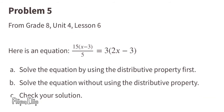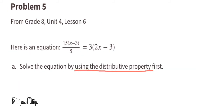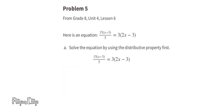Problem number 5, from 8th grade Unit 4, Lesson 6. Here is an equation. Part A: Solve the equation by using the distributive property first. Using the distributive property, we can rewrite the equation: 15 times x and 15 times negative 3 gives 15x minus 45, all over 5. And 3 times 2x and 3 times negative 3 gives 6x minus 9. Now multiply both sides by 5.